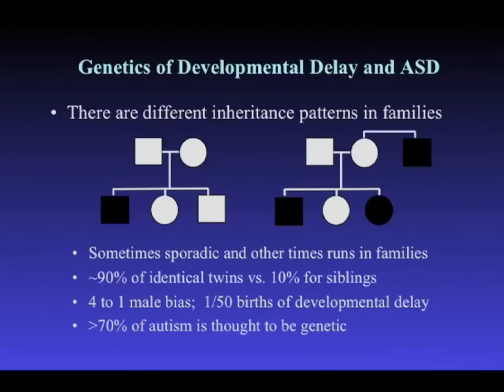Studies have pretty convincingly suggested a strong genetic component: 90% concordance for identical twins versus 10% for siblings or fraternal twins. There is a clear male bias — males are more likely to suffer from both developmental delay and autism, somewhere between two-to-one and four-to-one. Looking at the broad category of developmental delay in our population, it's easily one out of every 50 births — a huge health impact. Studies estimate the genetic component ranges from 55% up to about 90%.